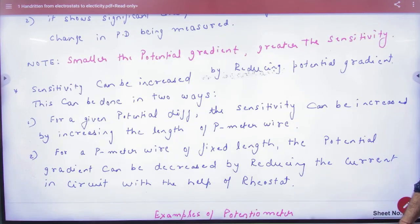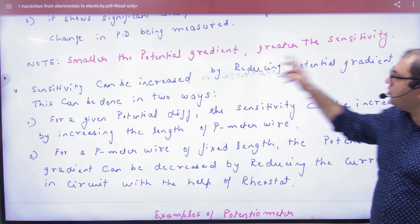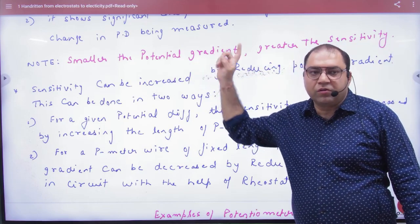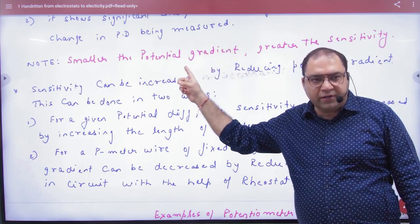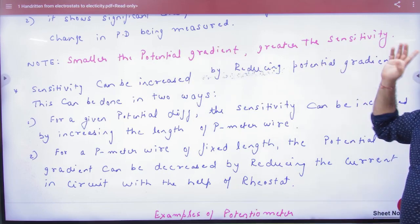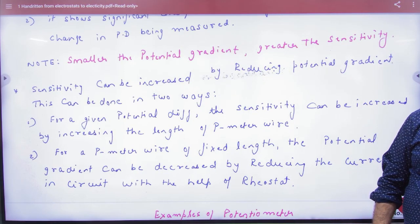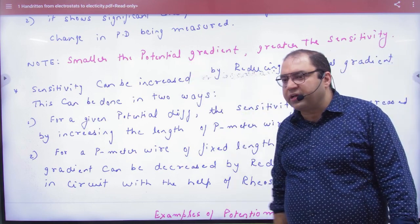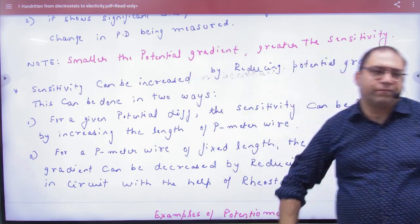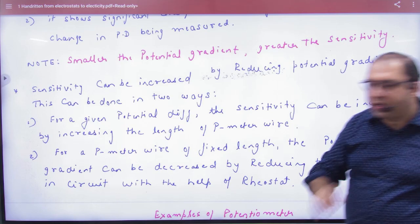So what do we need to do to make the potential gradient? Smaller is the potential gradient, greater is the sensitivity. So the sensitivity will be more sensitive if what will happen? Potential gradient will be small.